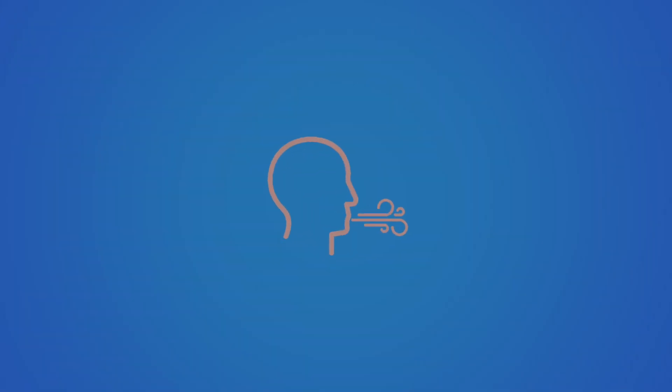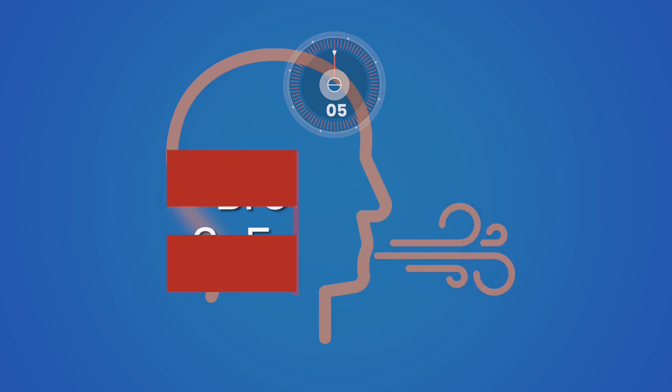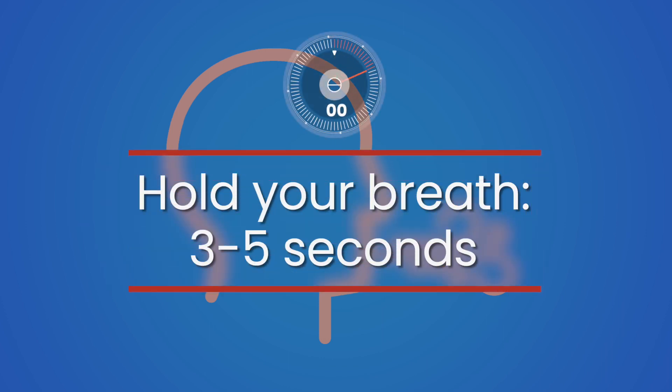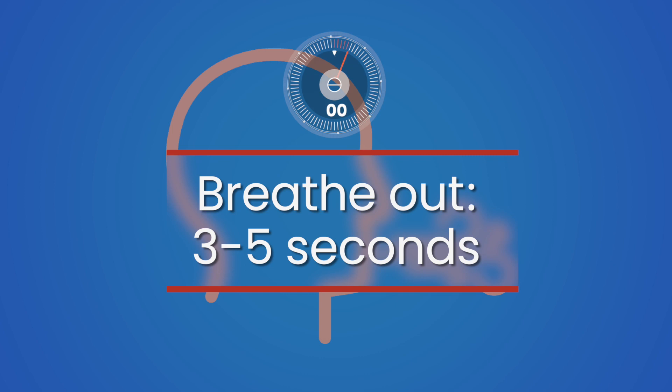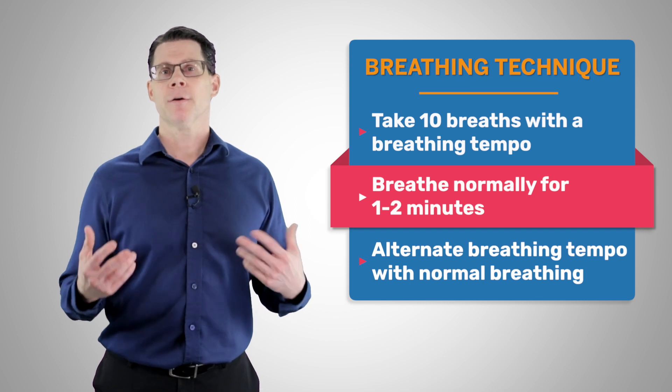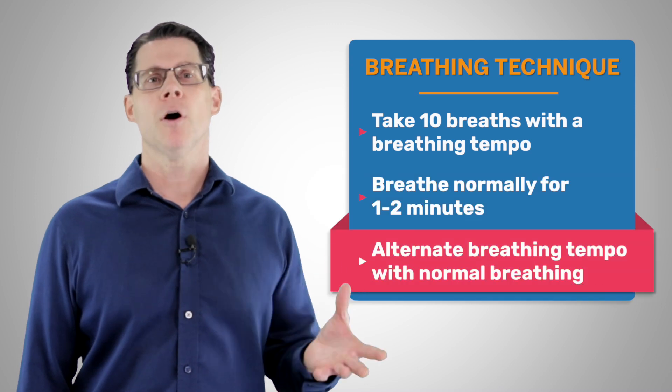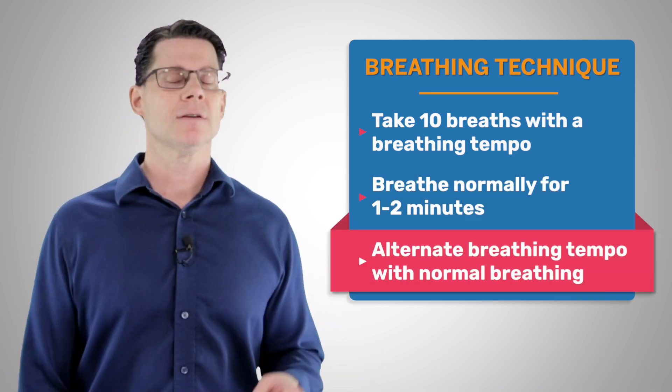When people use deep breathing, I like to see them follow a set breathing tempo. An example of a breathing tempo would be, breathe in for 3 to 5 seconds, hold your breath for 3 to 5 seconds, and breathe out for 3 to 5 seconds. If you repeat this breathing tempo 10 times and then alternate it with breathing normally, even just for a minute or two, can help to create a greater sense of calm and help prevent you from becoming even more anxious. And certainly feel free to alternate this breathing tempo with breathing normally as many times as you like.